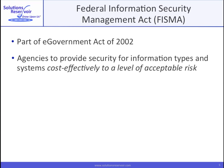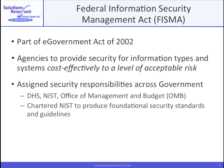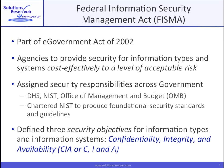FISMA was part of the E-Government Act of 2002, which called for agencies to cost-effectively secure information types and systems to an acceptable level of risk. The Act assigned areas of responsibility and chartered NIST to develop foundational guidelines. FISMA also defined three security objectives: confidentiality, integrity, and availability — C, I, and A. We'll see a lot of C, I, and A, so we've added a reference slide on them.